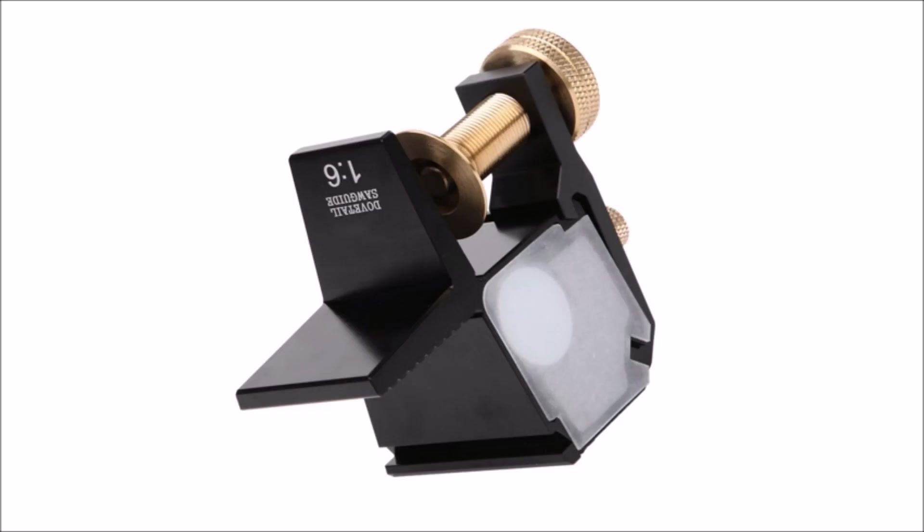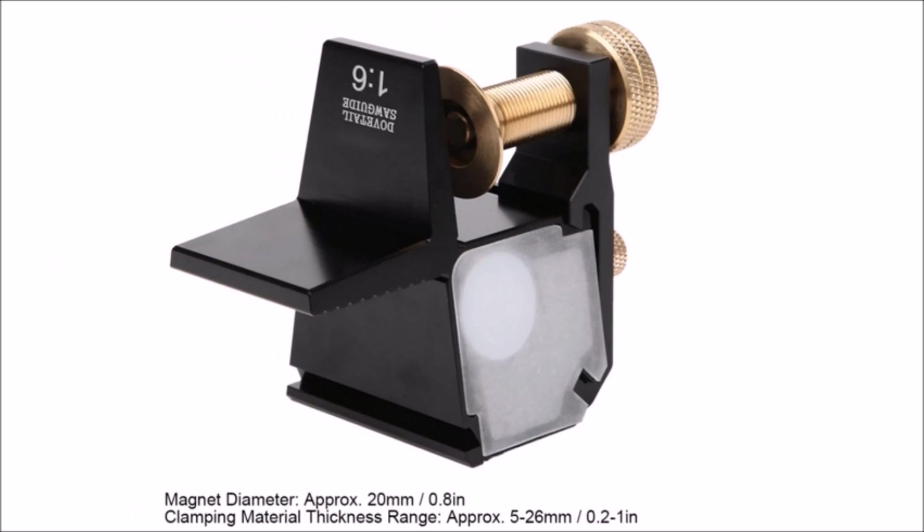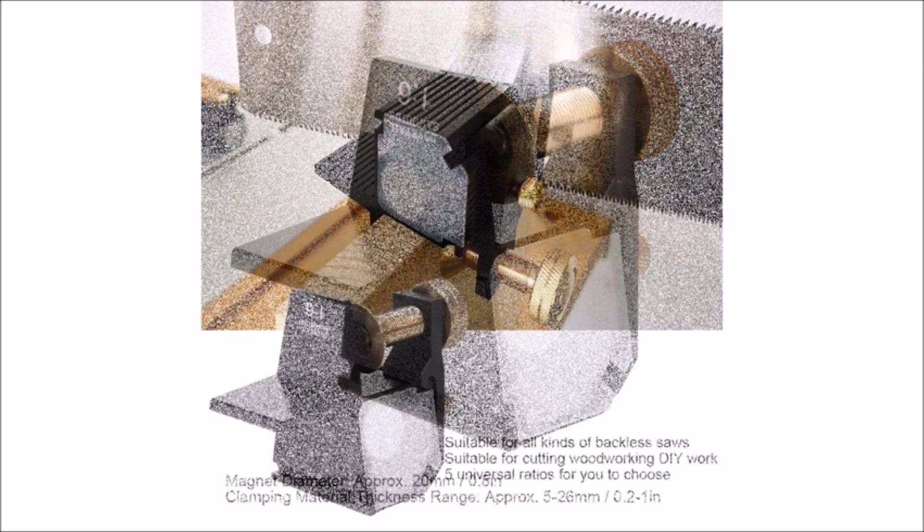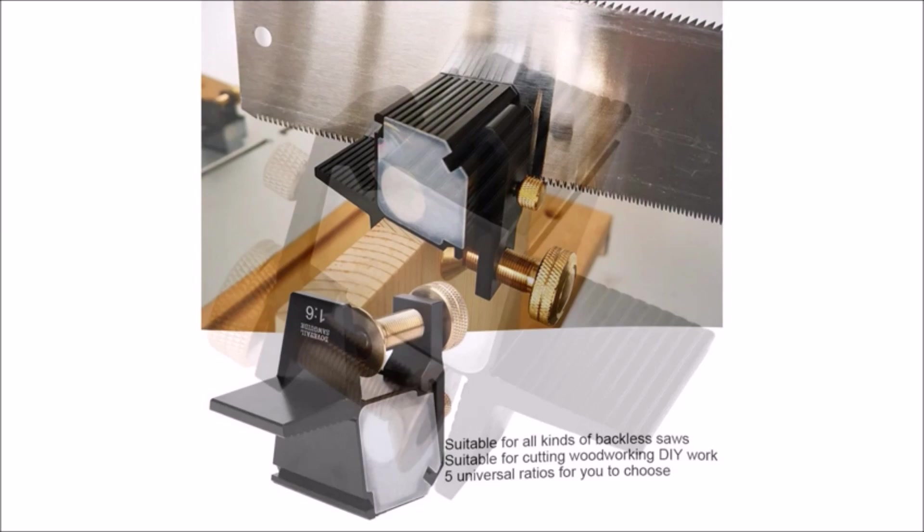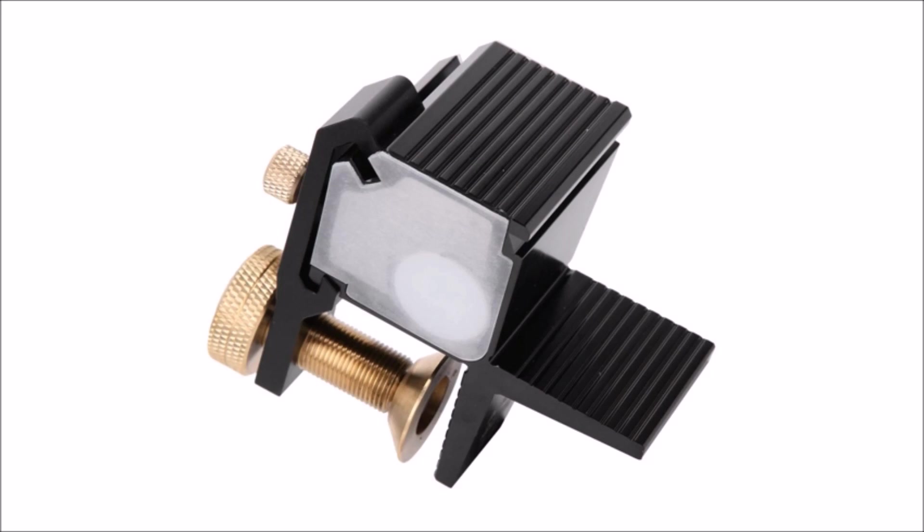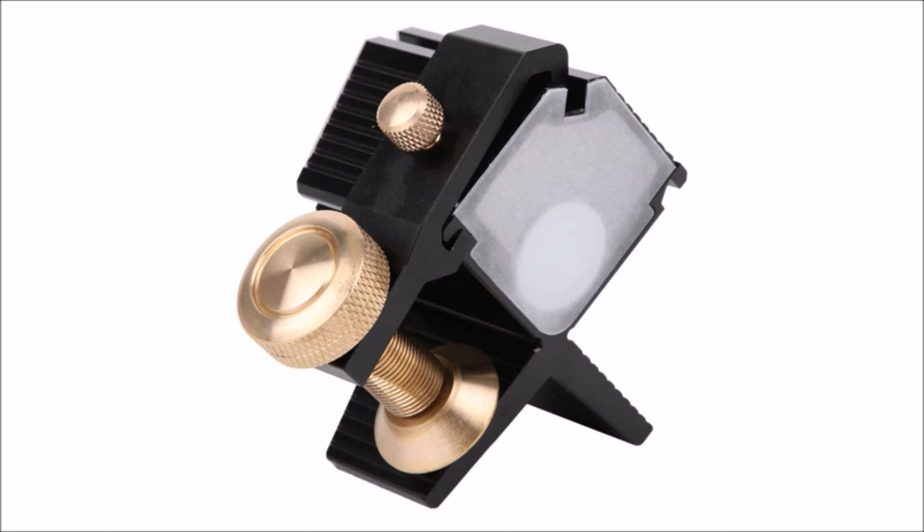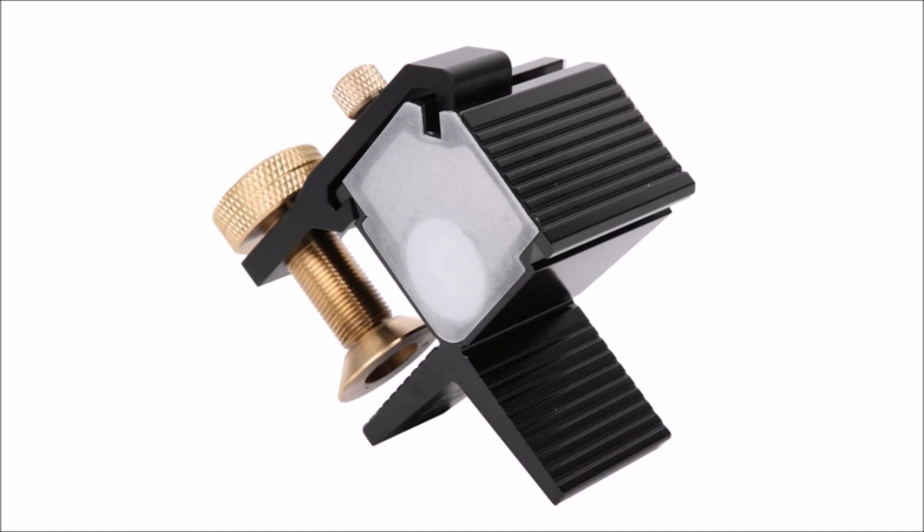Number 9, Dovetail Guide Gauge. A 20 mm magnetic block covered with a plastic protection sheet can be used to hold the saw and protect the cutting guide. Dovetail guide gauge made of aluminum alloy and brass, it is durable and an artistic product of woodworking. The aluminum alloy dovetail guide gauge is suitable for all kinds of backless saws. Dovetail guide gauge is very suitable for woodworking DIY work because it has five universal ratios for you to choose. This woodworking tool can provide you an amazing experience for it can make the small tail cutting simple, accurate, and time-saving.